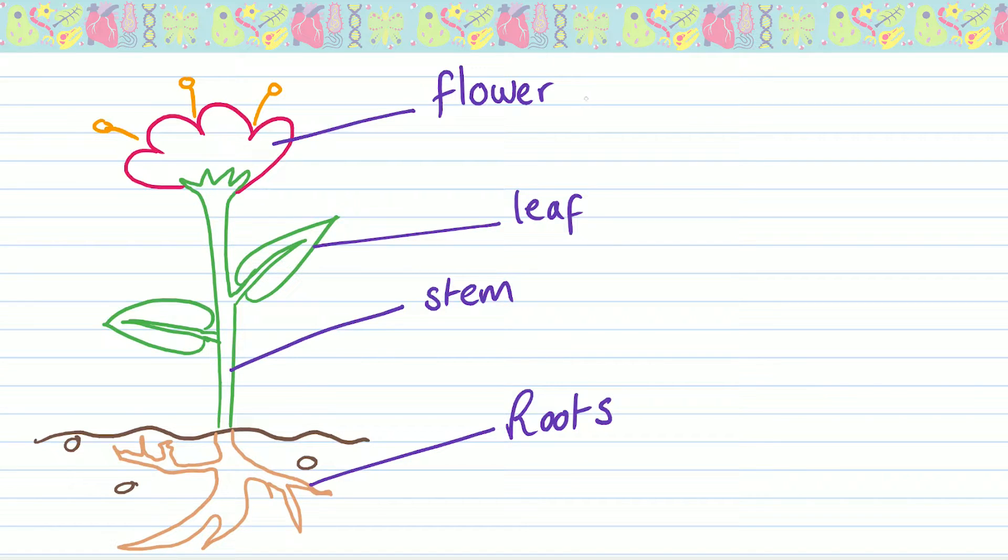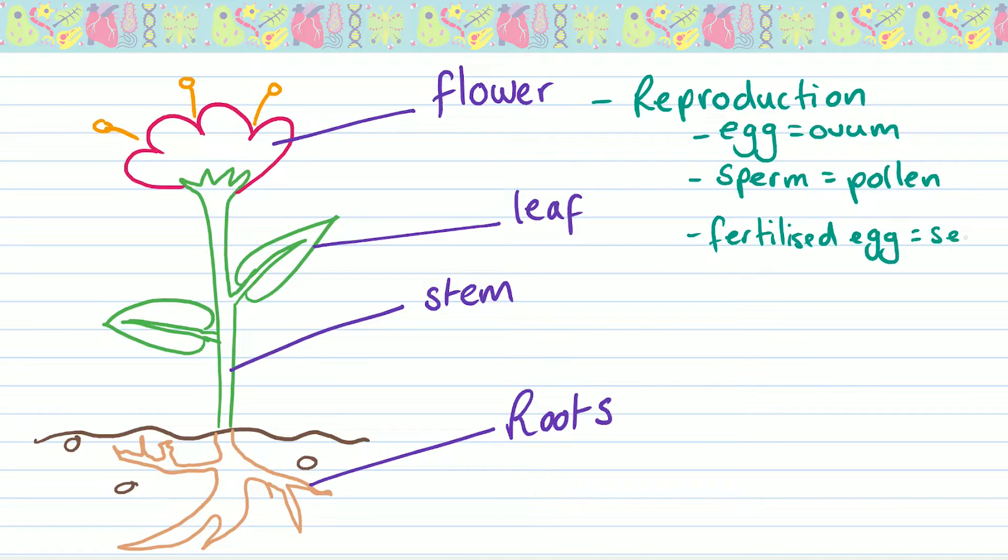Starting from the top, the flower is used for reproduction. It's there to look pretty, to attract pollinators, which will then do the ultimate job of mixing the sperm and the egg together to fertilise an egg. A seed is actually just the fertilised egg, so in humans that would be after the sperm and egg are fused.